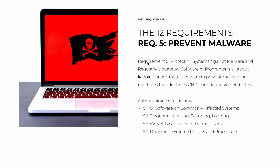Requirement number five, with the full name of Protect All Systems Against Malware and Regularly Update Antivirus Software or Programs, is very simple. It's about keeping antivirus software to prevent malware on machines that deal with cardholder data specifically, therefore eliminating vulnerabilities.